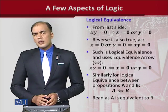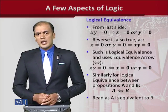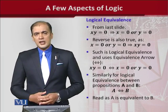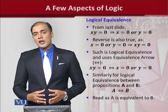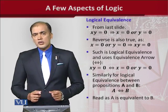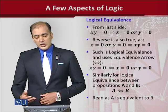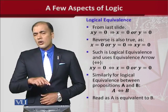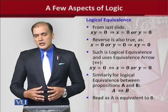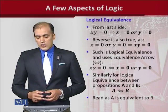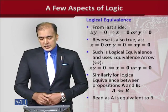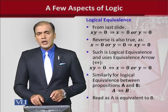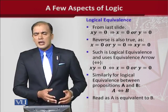The implication arrow can also go in both directions. If it comes back, it means A is also dependent upon B — this is called logical equivalence, and the arrow points on both sides. Using the same example: XY equals 0 because either of them is 0, and conversely, if X or Y is 0 it makes the product equal to 0. This two-pointed arrow is known as the equivalence arrow, and we read it as 'A is equivalent to B.'